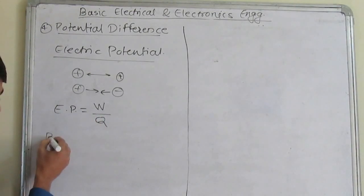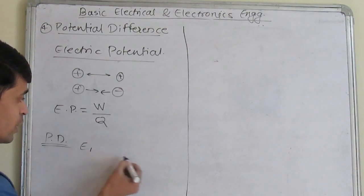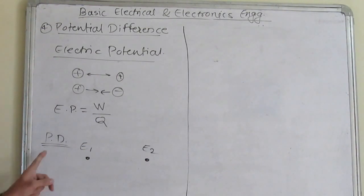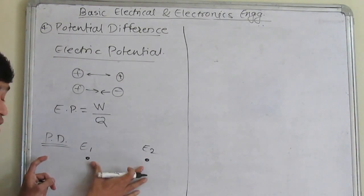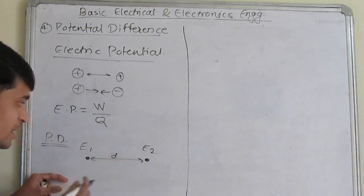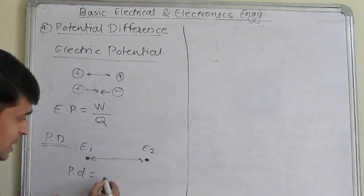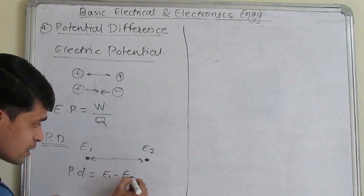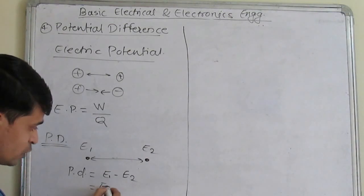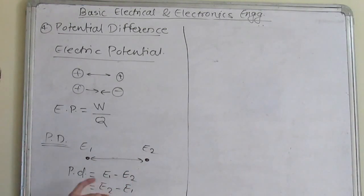Now the potential difference. What is potential difference? Suppose I am considering two electric potentials E1 and E2. Potential difference is nothing but the difference between these two electric potentials. Therefore, potential difference is equal to E1 minus E2, if E1 is at higher potential than E2, or E2 minus E1, if E2 is at higher potential than E1.